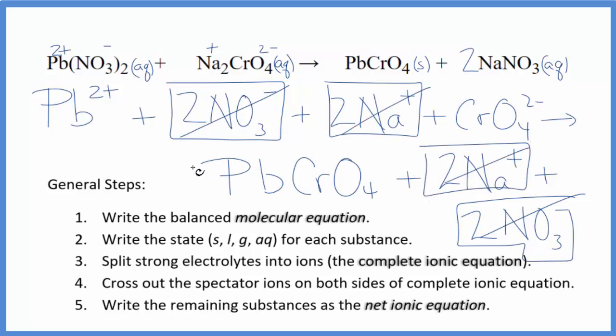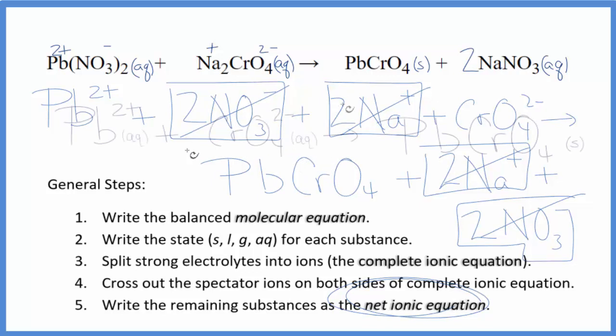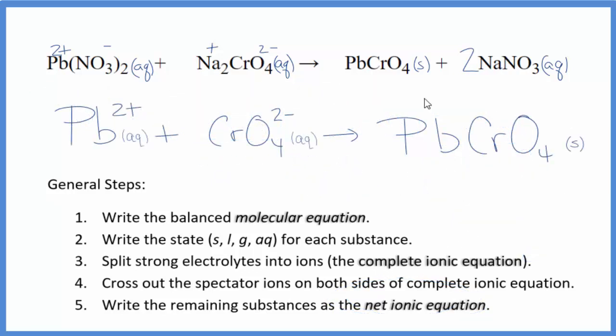What's left is the net ionic equation for Pb(NO3)2 plus Na2CrO4. I'll clean it up. Write the states in. We'll have our net ionic equation.